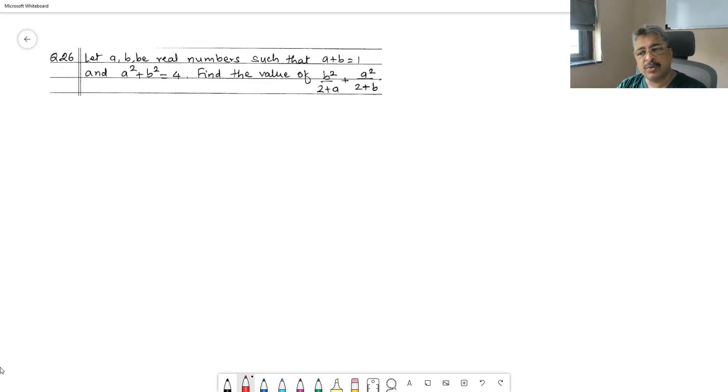Now, this is a typical situation where you can solve these two equations simultaneously, provided you know how to solve them simultaneously and find the value of a, find the value of b independently, and substitute those values in the equation to get the final answer. That is one way of doing it, but for that you require the theory of quadratic equations.